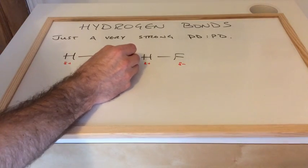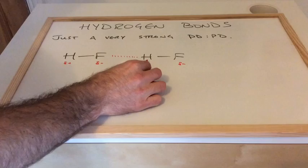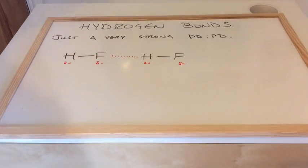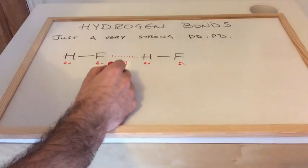The intermolecular force is obviously between the delta positive H on one molecule and the delta negative F on the other molecule. When you draw hydrogen bonds, just label that up now.